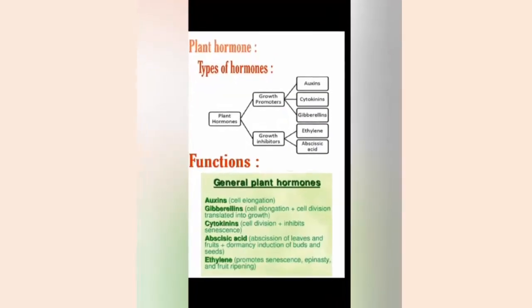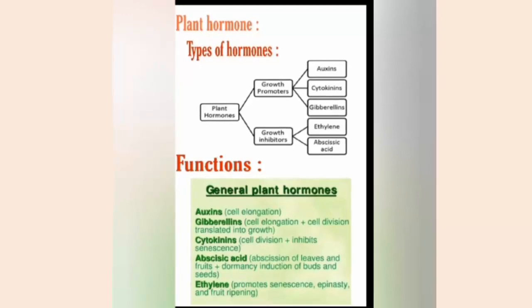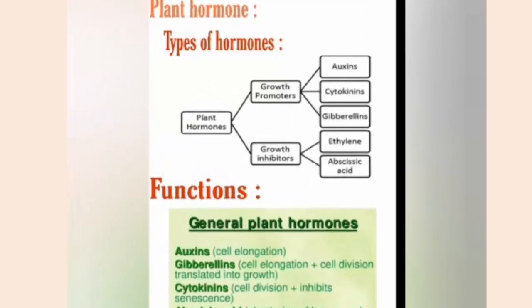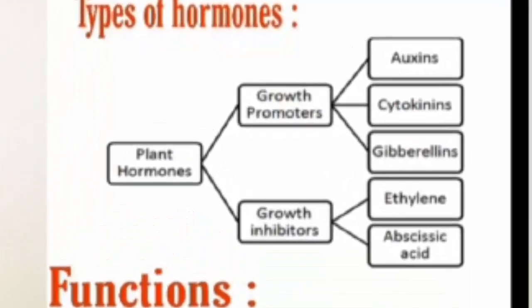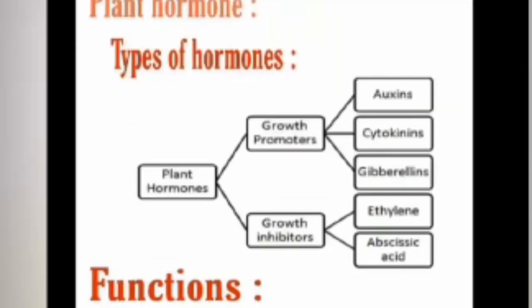Plant hormone. Internal factors that influence growth are called growth hormones or growth regulators, as they inhibit, promote, or modify growth. There are five types of plant hormone: auxins, gibberlin, cytokinin, abscisic acid, and ethylene. Out of these five, auxin, gibberlin, and cytokinin are called growth promoters, whereas abscisic acid and ethylene are called growth inhibitors.